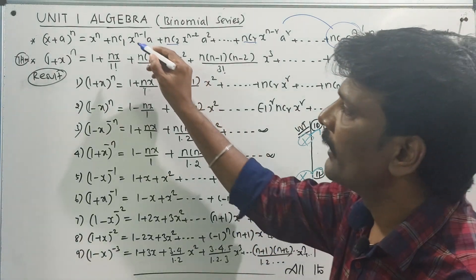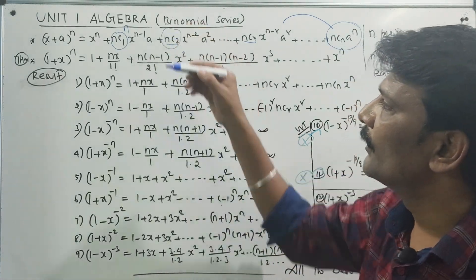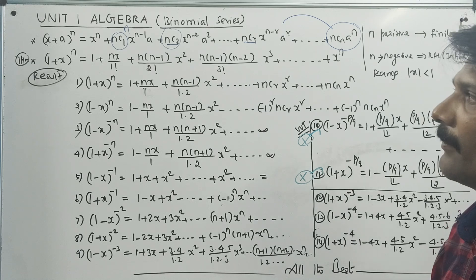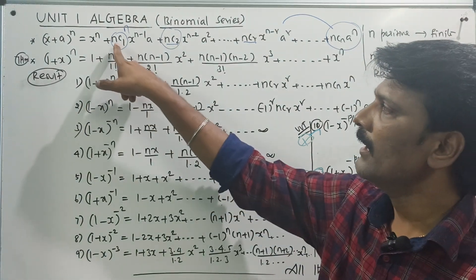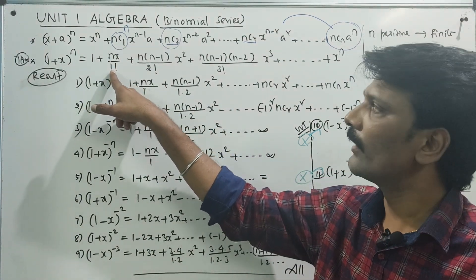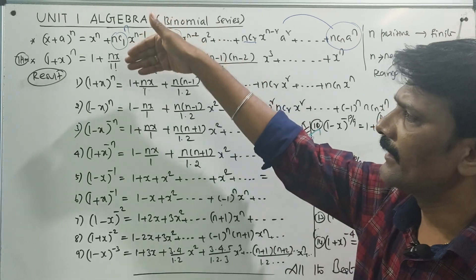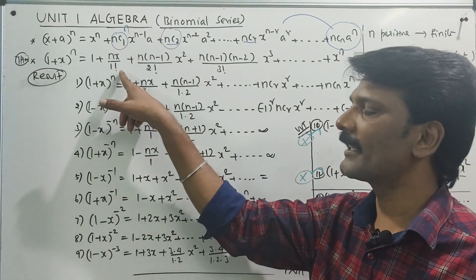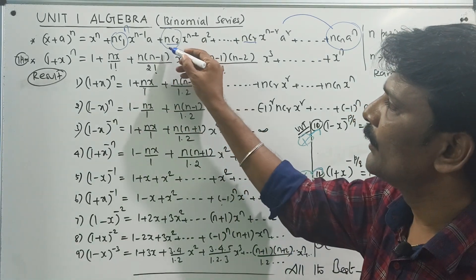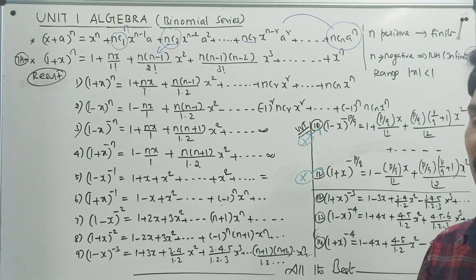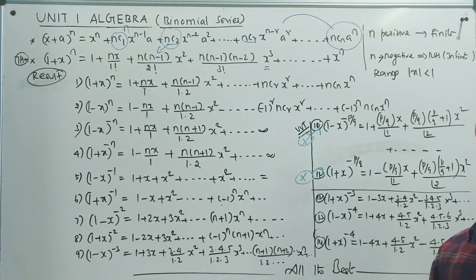So let's look at: x power n plus nc1 into n minus 1 by 2 factorial, plus x power n by 1 factorial, plus nc2 into n minus 1 by 2 factorial, plus n into n minus 1 into n minus 2 by 3 factorial into x squared, plus etc.